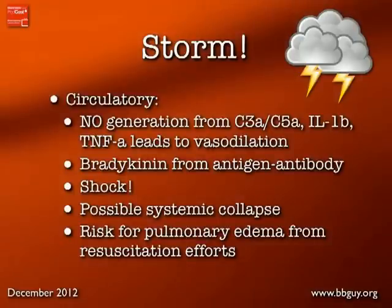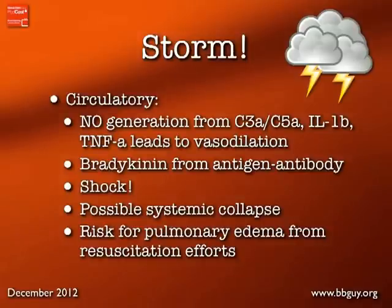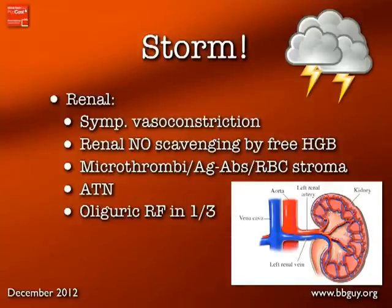For circulatory consequences: nitric oxide generated from C3a, C5a, and cytokines causes vasodilation. Bradykinin — from activation of the intrinsic coagulation system — is a short-acting vasodilator. As a result, patients can develop significant hypotension and shock very quickly, going into systemic collapse rapidly. Pulmonary edema is also a concern we'll return to momentarily.